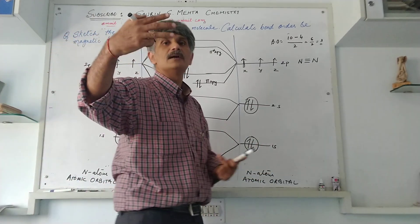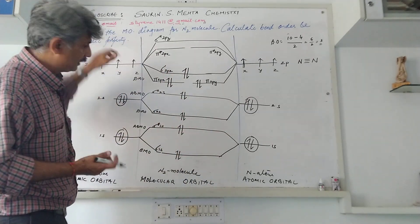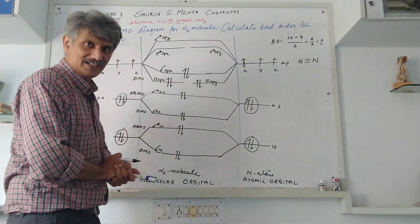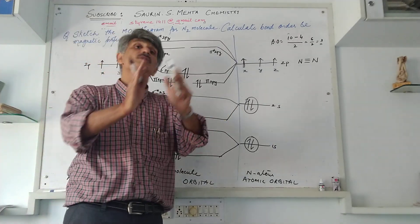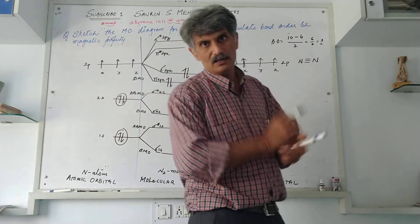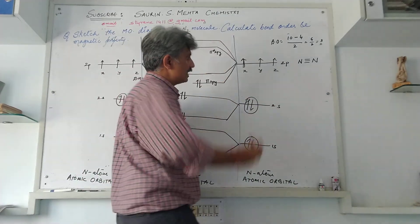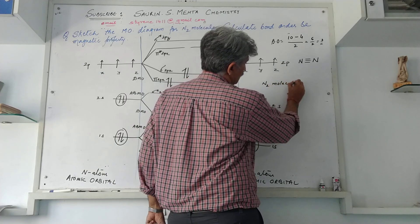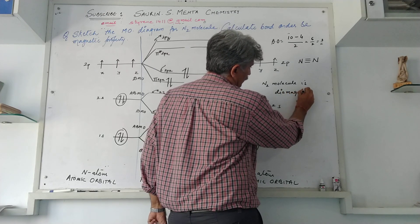For the magnetic property: looking at the filled MO diagram, every orbital contains two paired electrons — there is no unpaired electron. When all electrons are paired, the magnetic property is diamagnetic. Therefore, the nitrogen molecule N₂ is diamagnetic in nature.